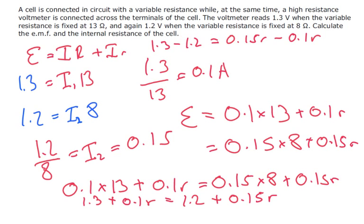So simplifying, 1.3 minus 1.2 is 0.1. And then 0.15R minus 0.1R becomes 0.05R. So lastly, 0.1 divided by 0.05 is going to be our internal resistance. Hopefully we've made it. And we get an internal resistance of 2 ohms. All that math and we've just got 2.